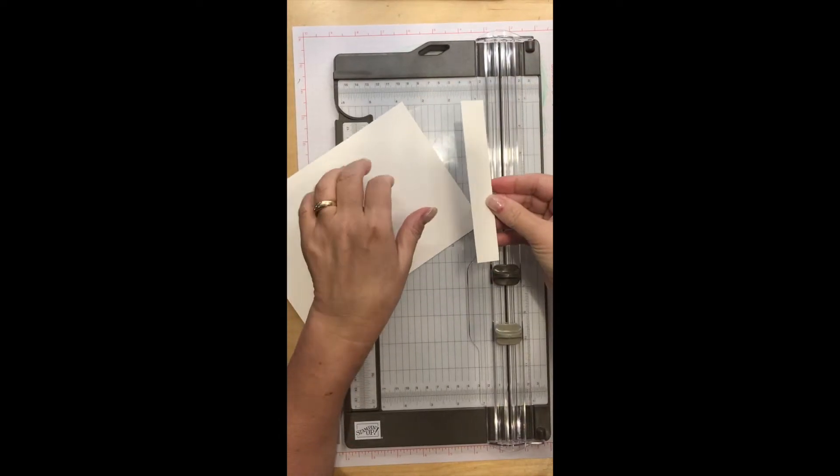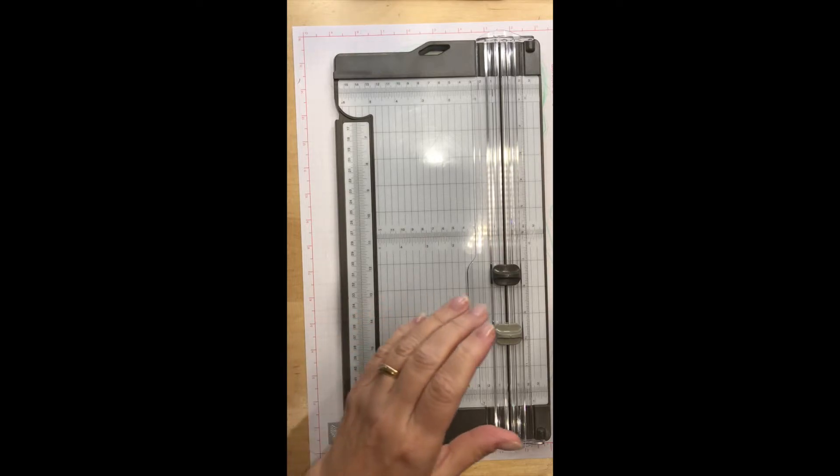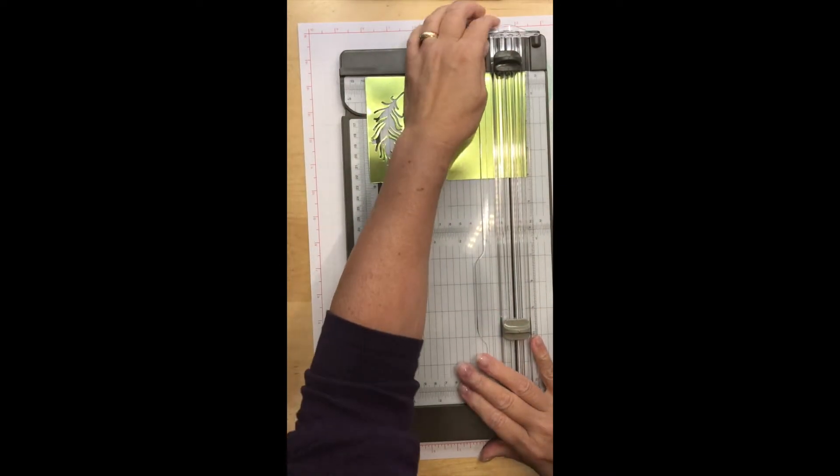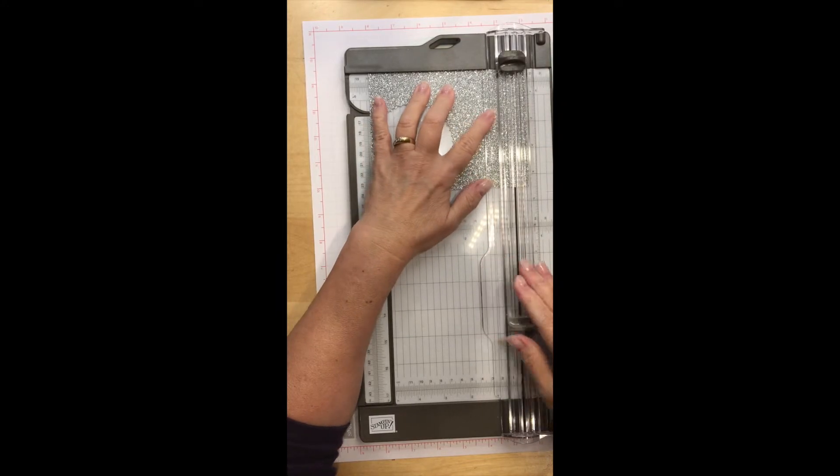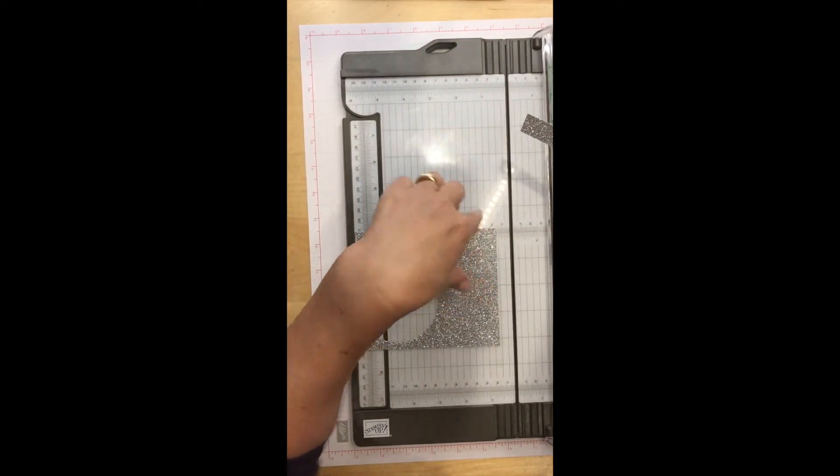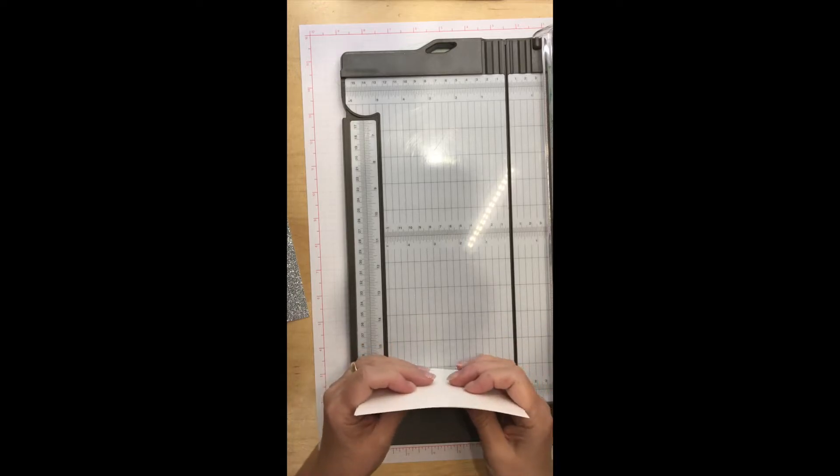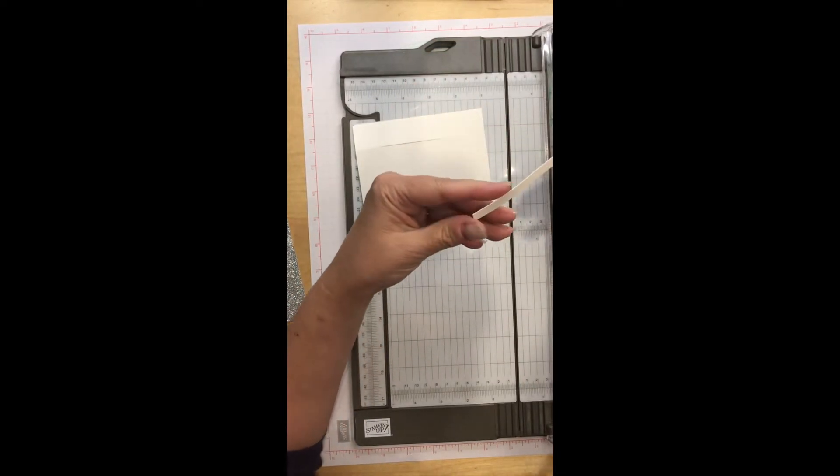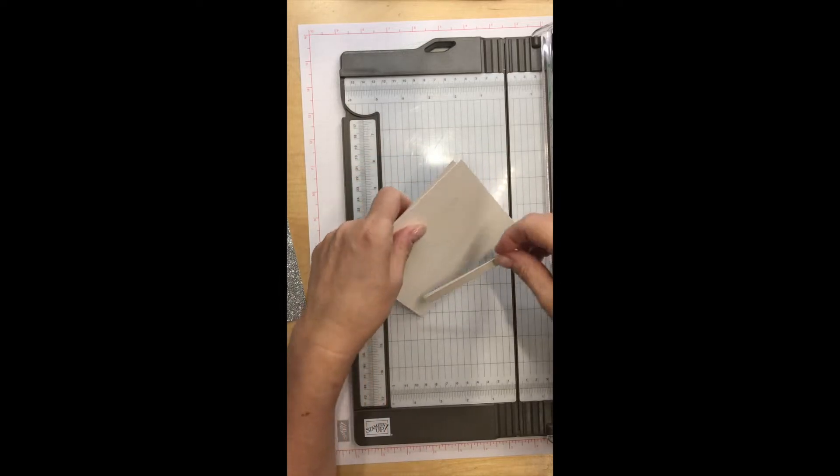I always find that some of our specialty papers are a little more challenging. Here's the foil. The one that always causes me grief is the glimmer paper. Wow! Look at that—it went through there like butter. Sometimes I'd have to go up and down with the older blades. Sometimes I like to cut more than one sheet—here's some regular whisper white. Let's cut two sheets. Excellent! Look at that. Probably wouldn't go more than two, but you can cut multiples.